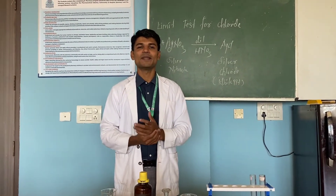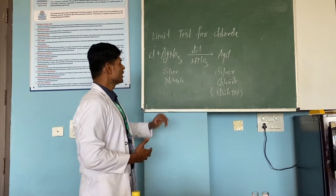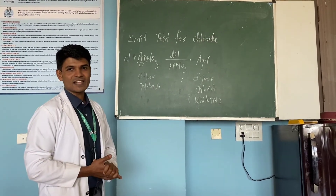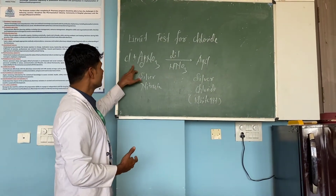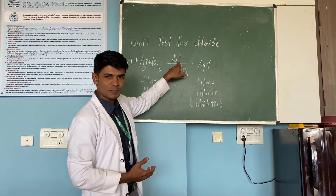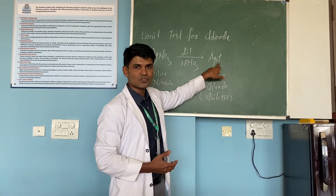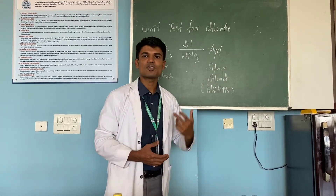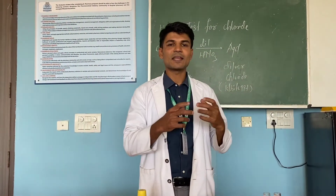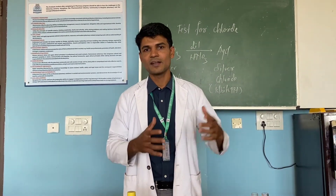Today we will see how to perform the limit test for Chloride. First, the principle: if Chloride ions are present in the sample, they will react with AgNO3. When we maintain acidic conditions using dilute HNO3, we get AgCl, which will be visible as a white precipitate. Based on that, we can compare whether the Chloride content is more than the standard and determine if the sample passes the limit test or not.